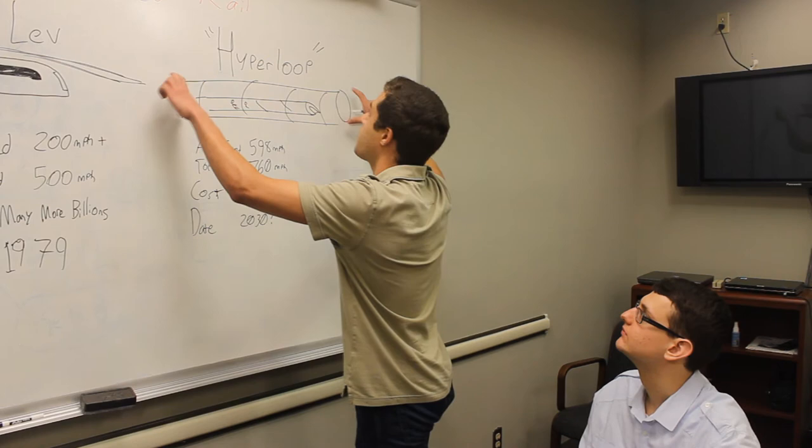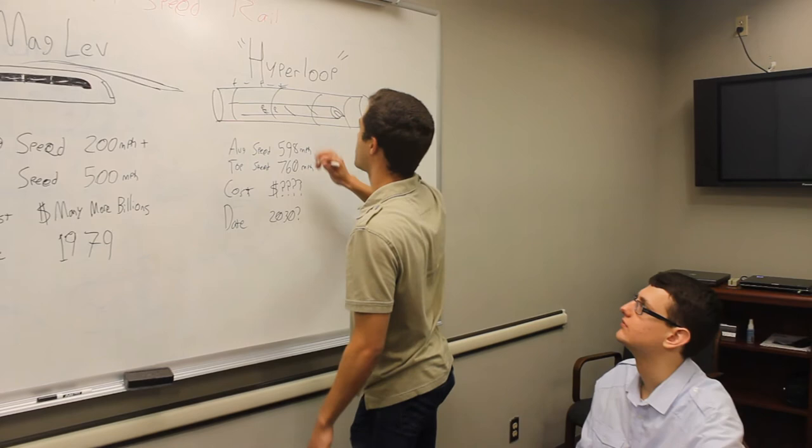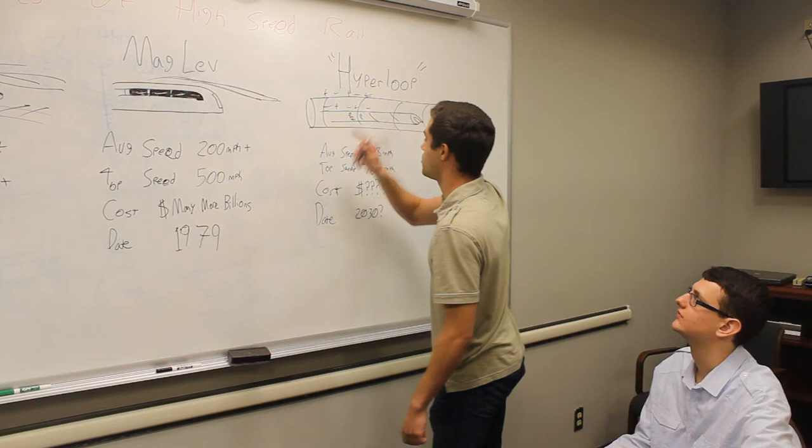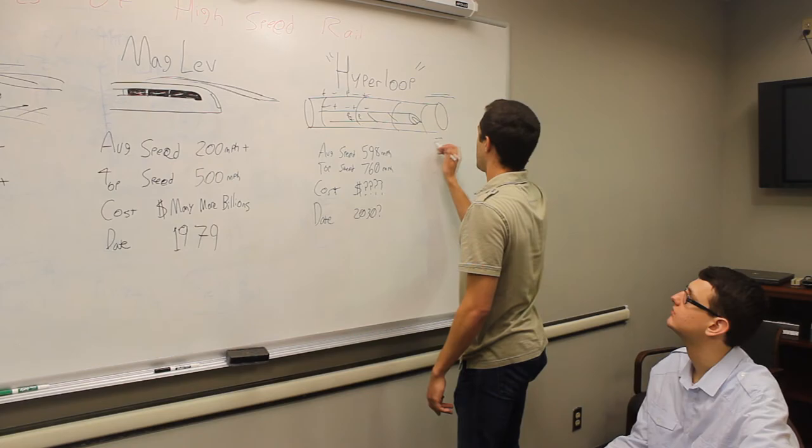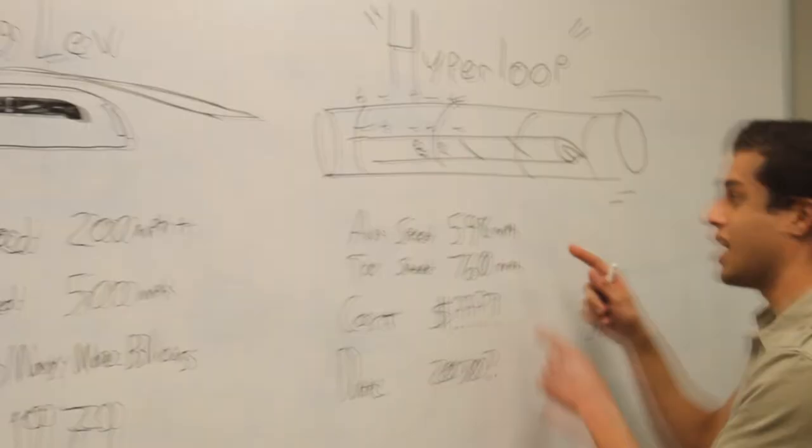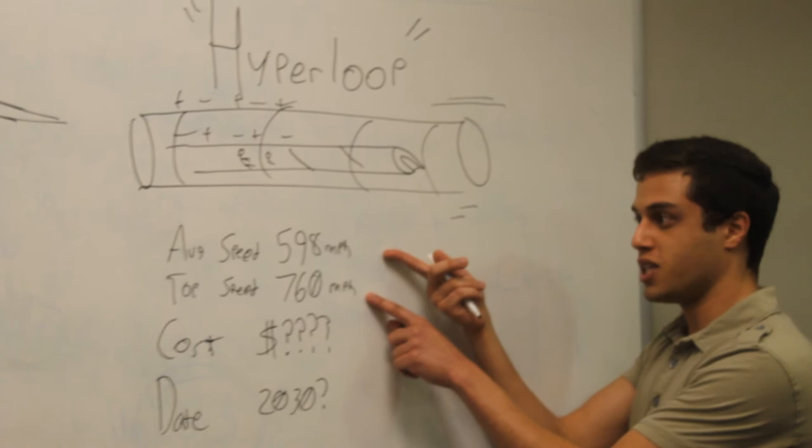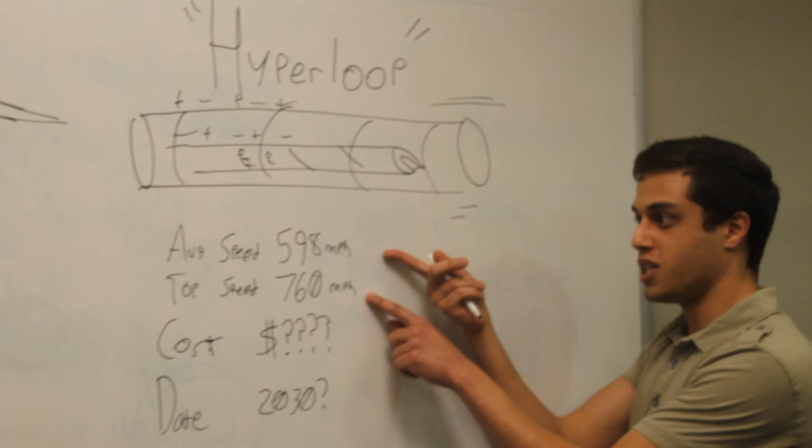The Hyperloop works similar to a magnet given that there's magnets moving it and pushing it along. Just like that, if my physics is still correct. And since there's no air inside here, the air is outside.